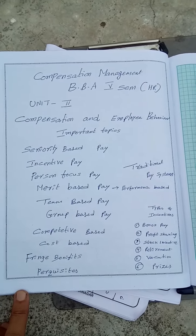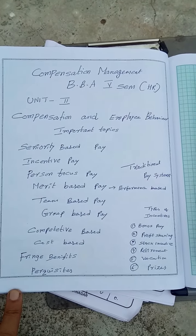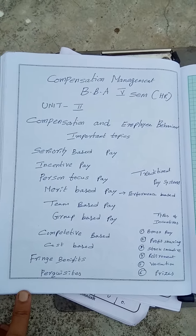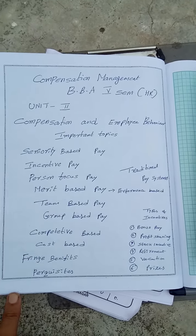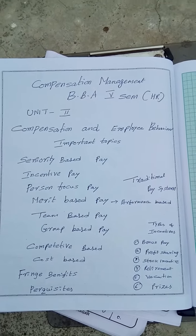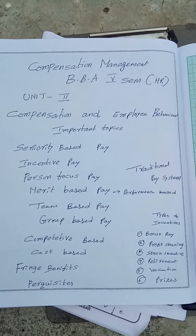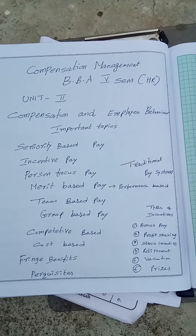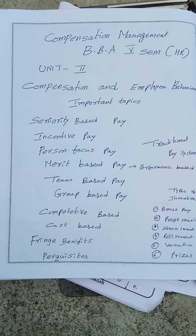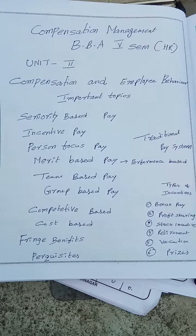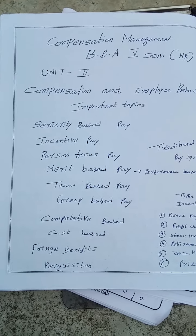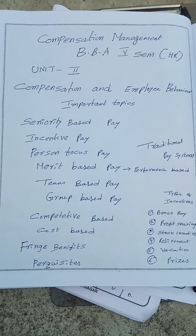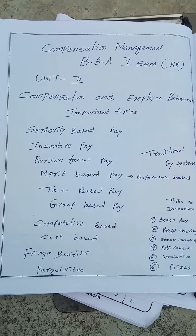Fringe benefits means extra benefits given to employees, like additional services such as free bus service and canteen service — these are called fringe benefits. Perquisites are different: fringe benefits are maintained by the employer overall for expenses like entertainment, sports, and rehabilitation. But in case of perquisites, they are part of the salary — other than salary, a gardener, security, a car, or a house quarter may be provided. Perquisites are part of salary and they are also taxable.